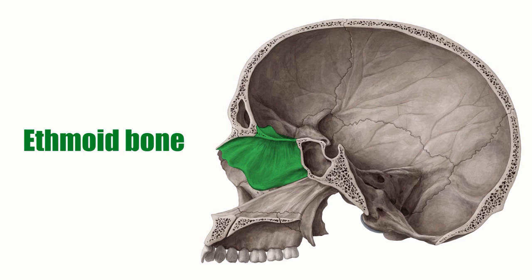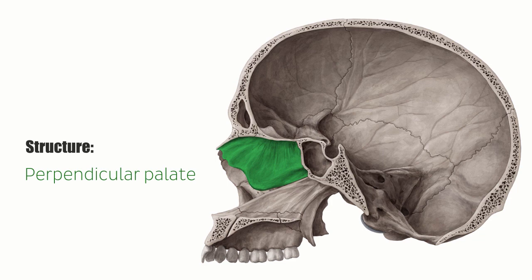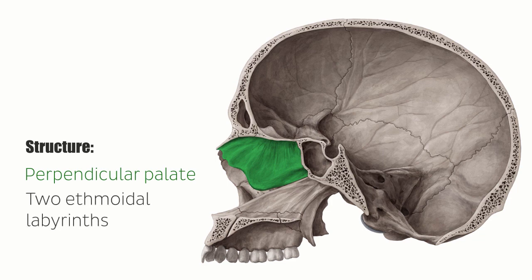It is an unpaired bone in the ethmoid notch of the frontal bone that contributes to the molding of the orbit, nasal cavity, nasal septum, and the floor of the anterior cranial fossa. The bone consists of a perpendicular plate, which you can see highlighted in green on this image, and two ethmoid labyrinths, which are all superiorly attached to the cribriform plate.